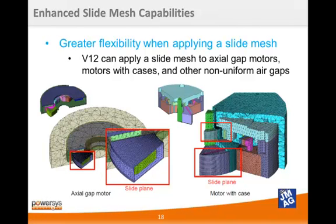As far as meshing goes, JMeg version 12 has made a major improvement in the capabilities of the slide mesh generator. In previous versions, the slide mesh could only be used in models with uniform air gaps. In version 12, the slide mesh has substantially more flexibility to work in axial gap motors or in radial gap motors with components in the air gap. Using the slide mesh for these models will increase the analysis speed and improve the overall accuracy.